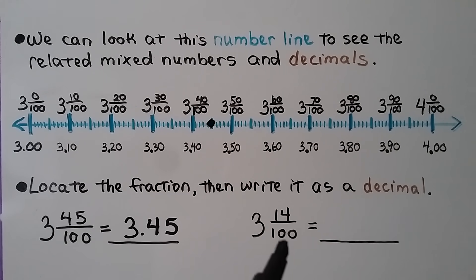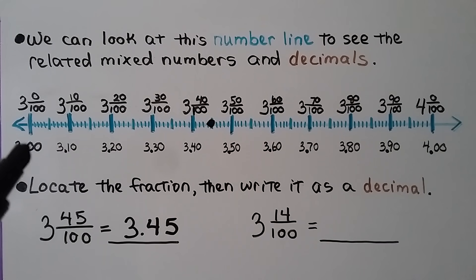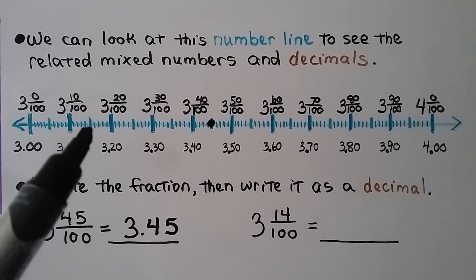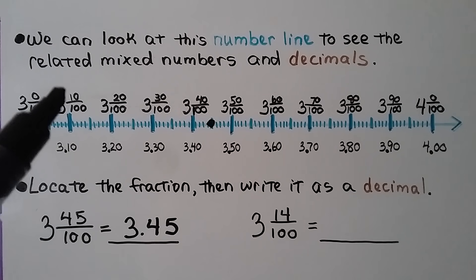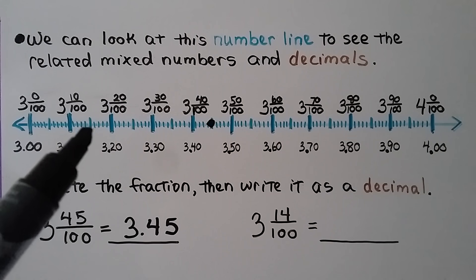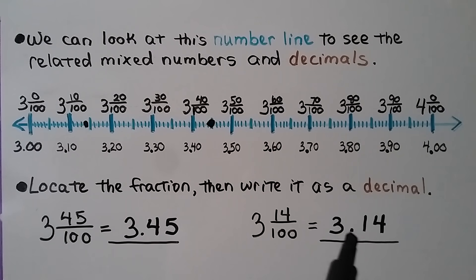Now we need to find 3 and 14 hundredths. We can see here's 0 hundredths, 10 hundredths, 20 hundredths — it's going to be between the 10 hundredths and the 20 hundredths marks. This middle mark must be 15 hundredths; we need 14, so it must be this tiny mark just to the left of the middle — 10, 11, 12, 13, 14. It would be right there. We write it as a decimal: 3, decimal point, 1 in the tenths place, 4 in the hundredths place.